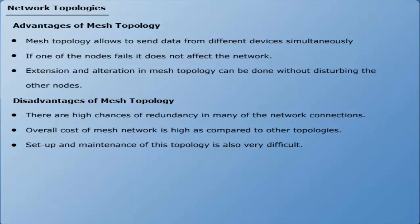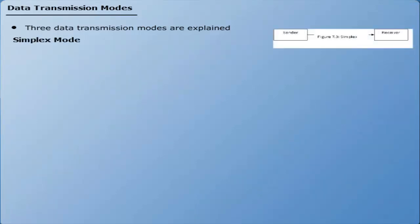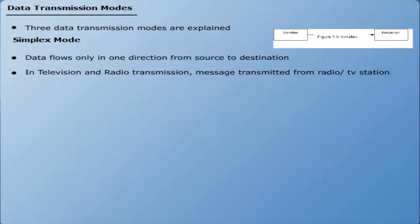There are three modes of data communication: simplex, half duplex, and full duplex. In simplex mode, data flows only in one direction, from the source to the destination. For example, in television and radio transmission, data is transmitted from the radio/television station to the radio and television set.